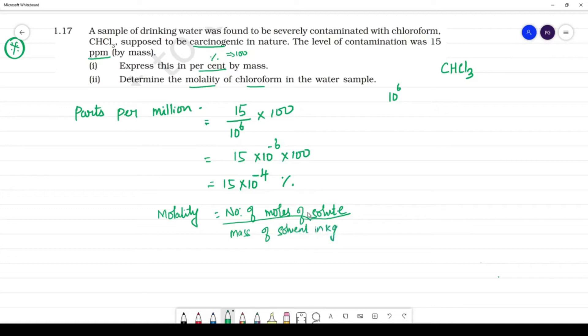So if we calculate number of moles of solute. This is given mass, molar mass, number of moles. Given mass by molecular mass. Now this is given mass, molecular mass is 12 plus hydrogen 1, 3 into 35.5, this is chlorine.